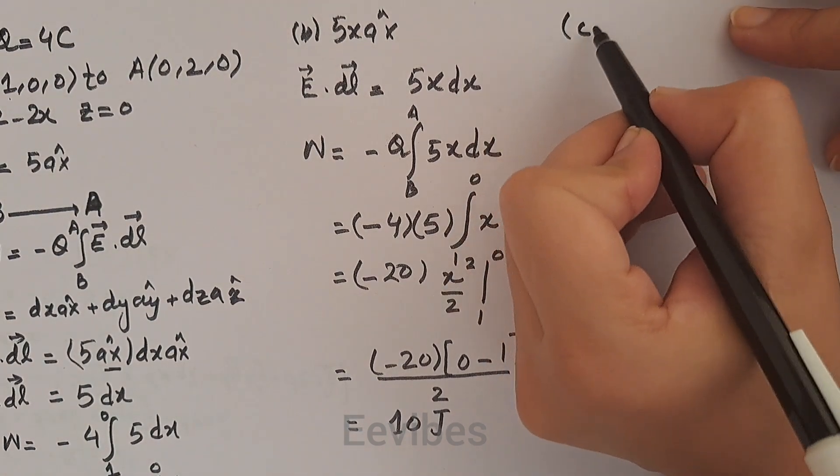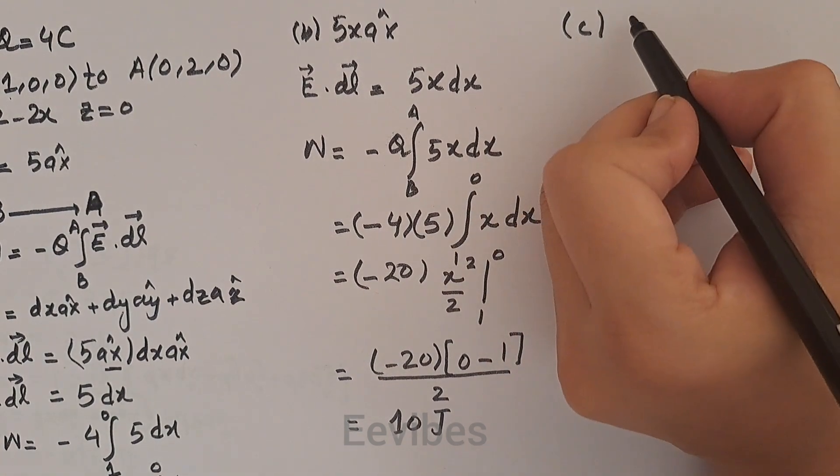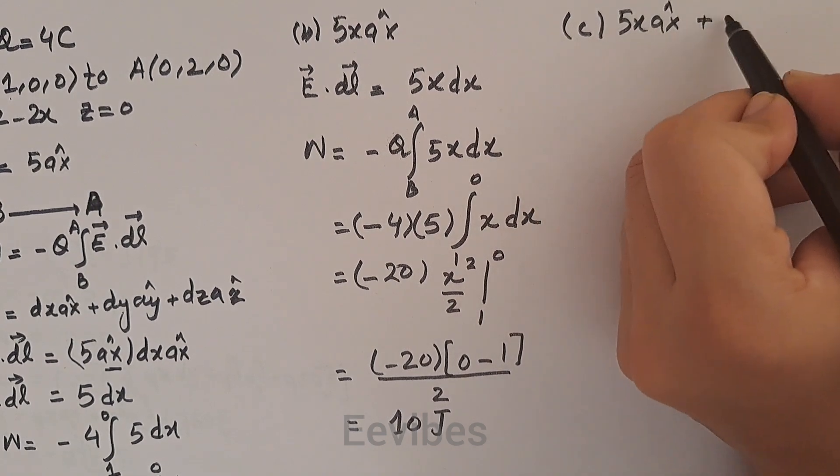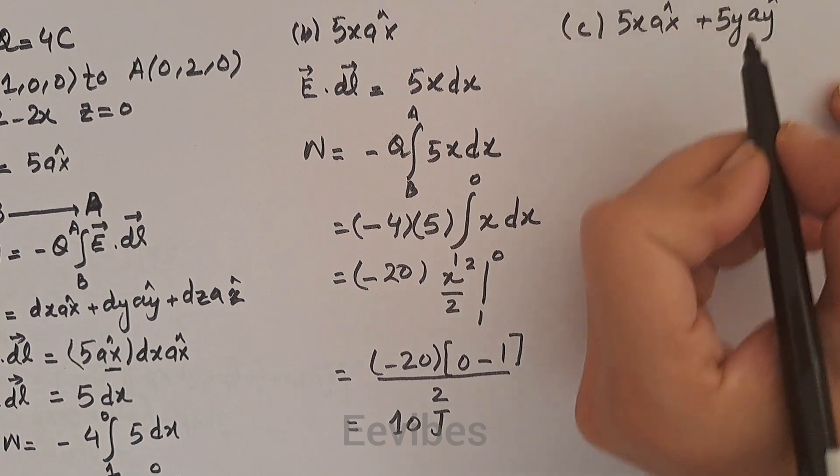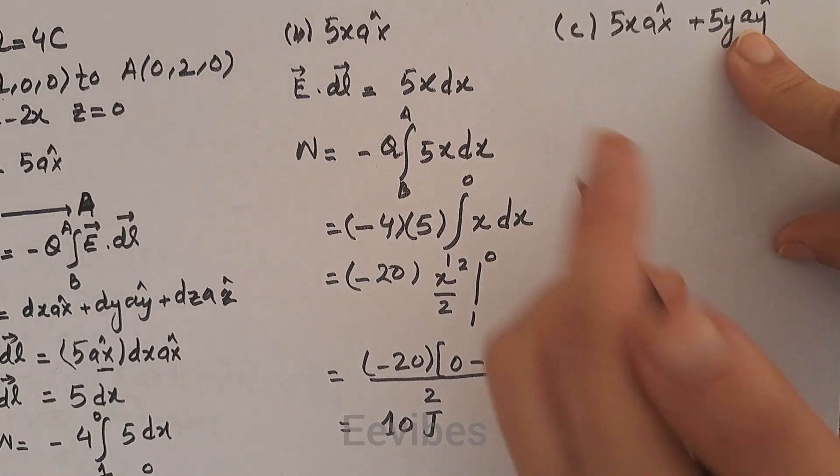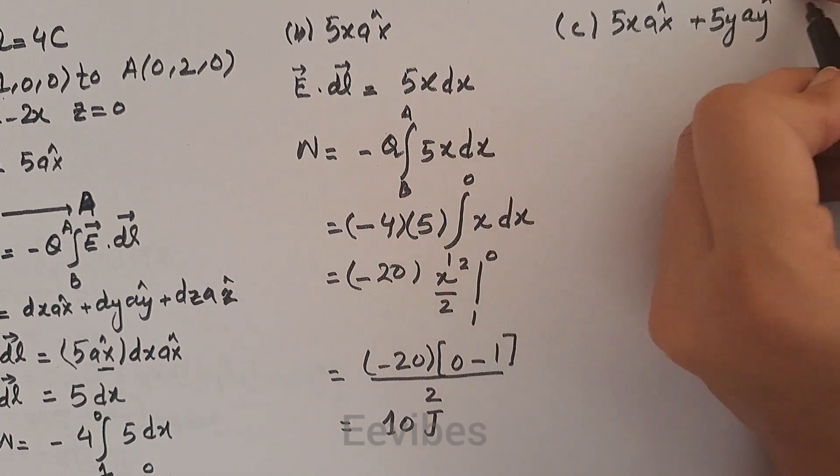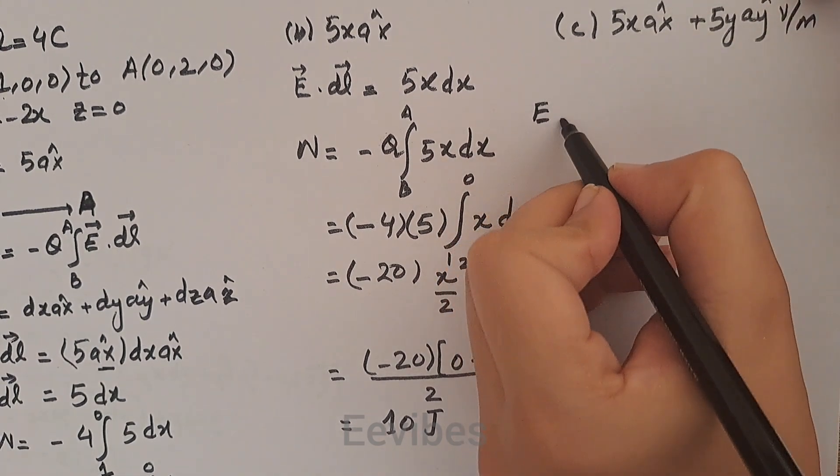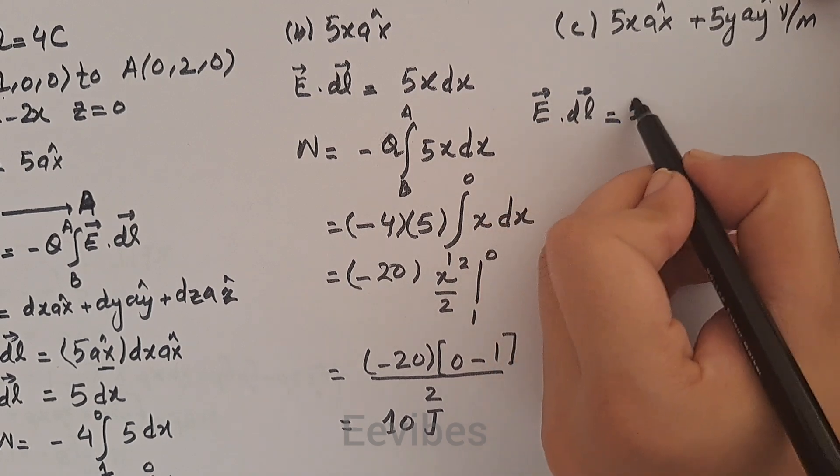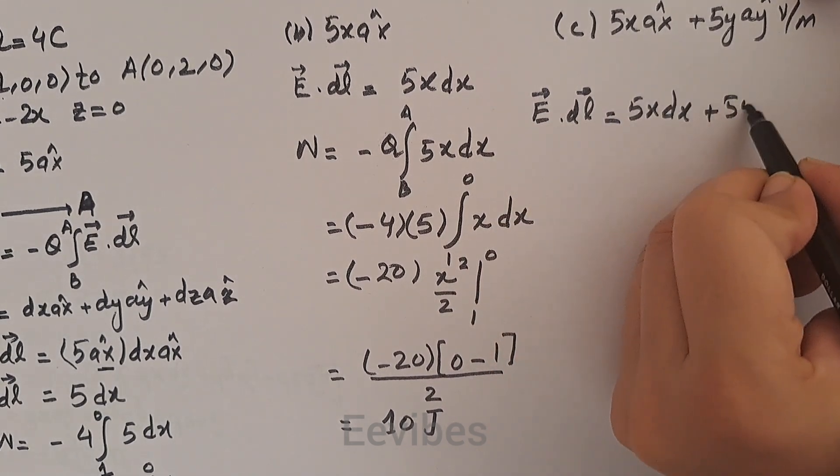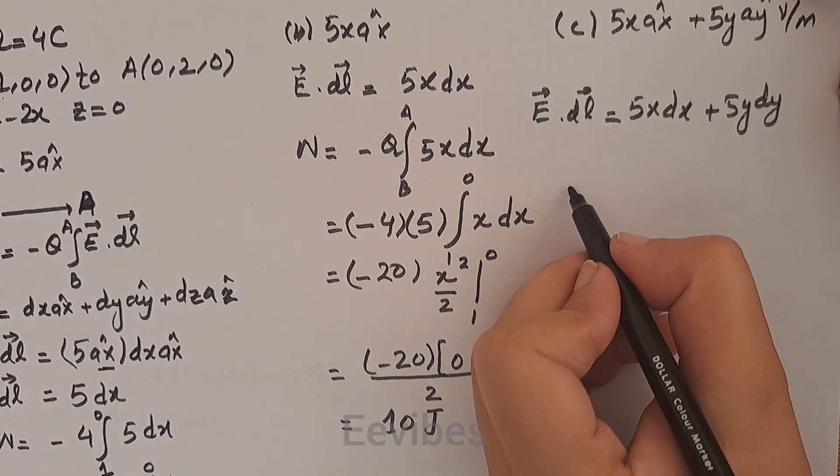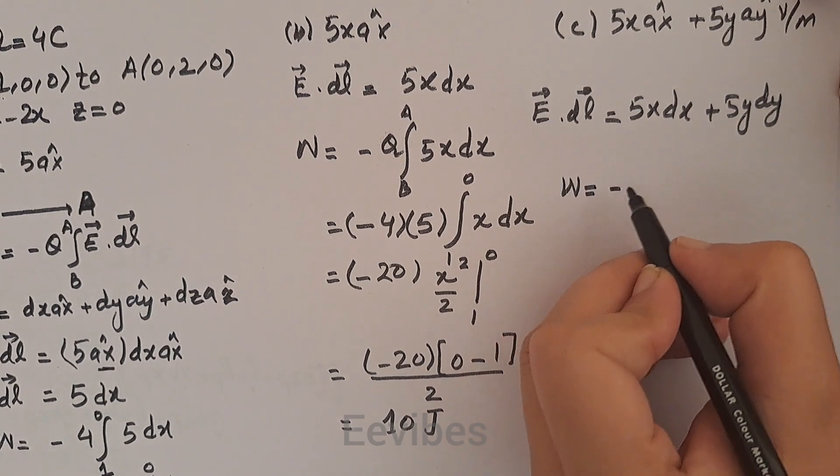Moving to the third part, which is the C part. Here the electric field is equal to 5x ax̂ + 5y aŷ. E·dl will be equal to 5x dx + 5y dy. The next step is to write the expression of work, which is equal to -Q, and then integral of 5x dx plus integral of 5y dy.